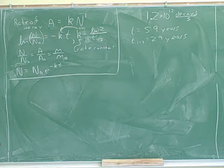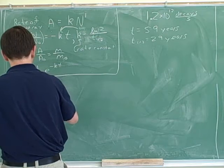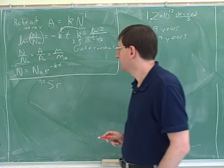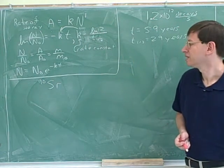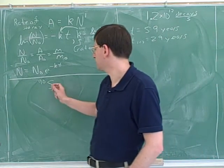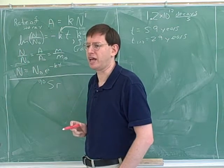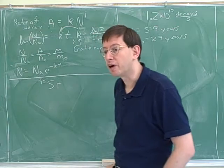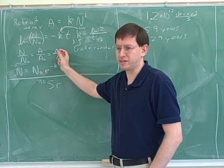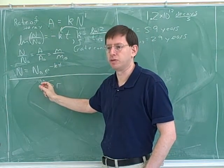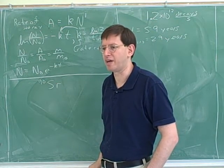What did you say — N0 is going to be 90? N0 would be 90. I think that's a misinterpretation. What does this 90 tell us? Atomic mass? It tells us that each of these strontium nuclei has a mass of 90 atomic mass units. That really doesn't have anything to do with N. The M here is supposed to be the total mass of all the nuclei. This tells us the mass of each individual nucleus — it's just a fact about this isotope of strontium.